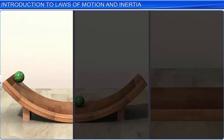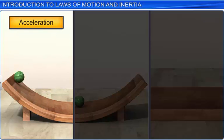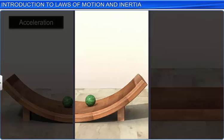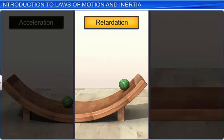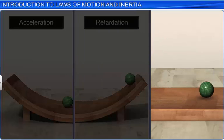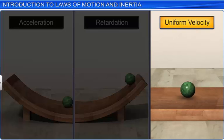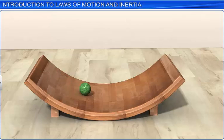The first experiment was with one inclined plane. A roller rolling down an inclined plane on its own accelerates. A roller rolling up an inclined plane on its own retards. A roller rolling on a horizontal plane neither accelerates nor retards, which means that the roller should move with constant velocity when there is no friction between the roller and the horizontal plane.